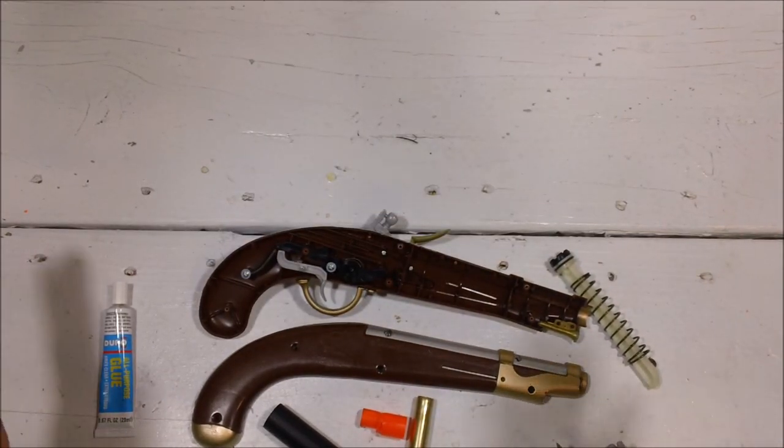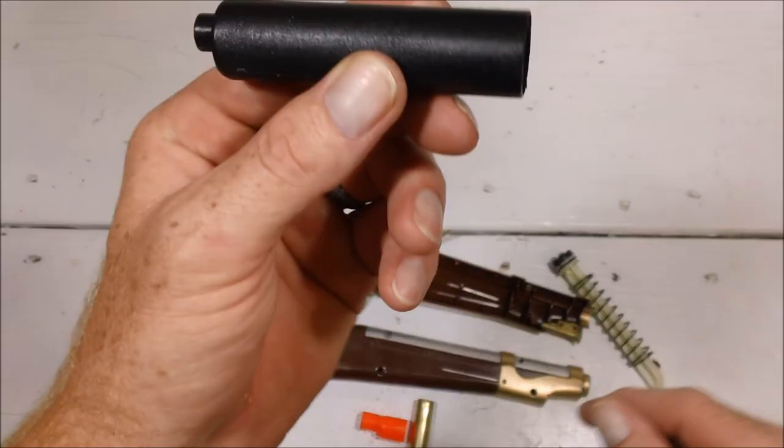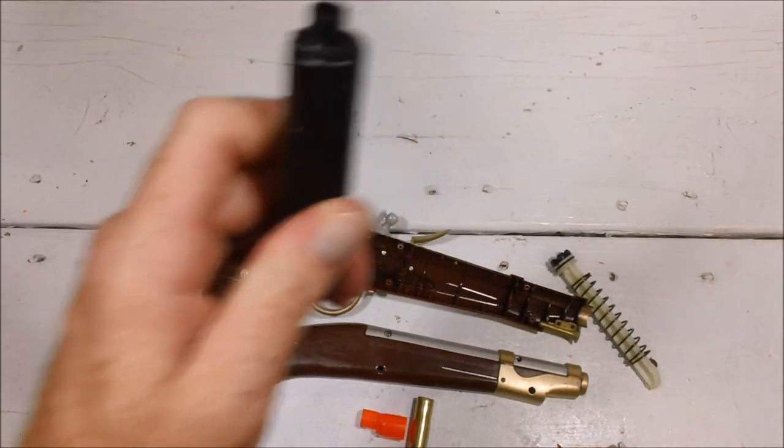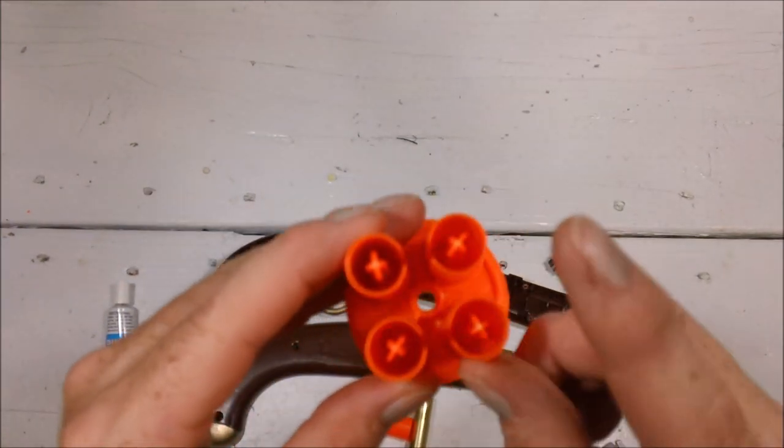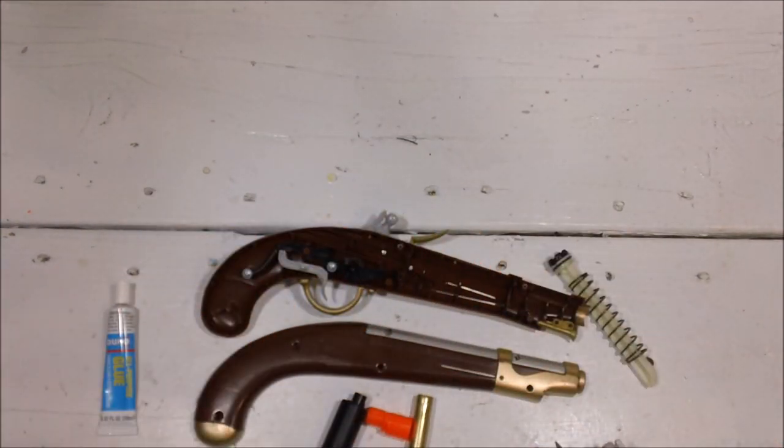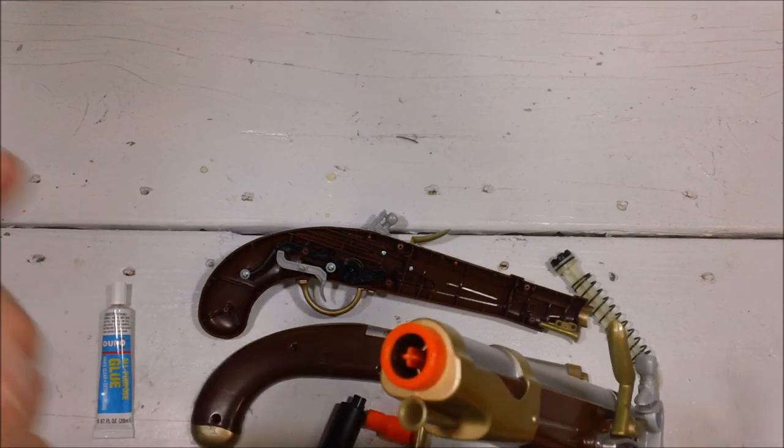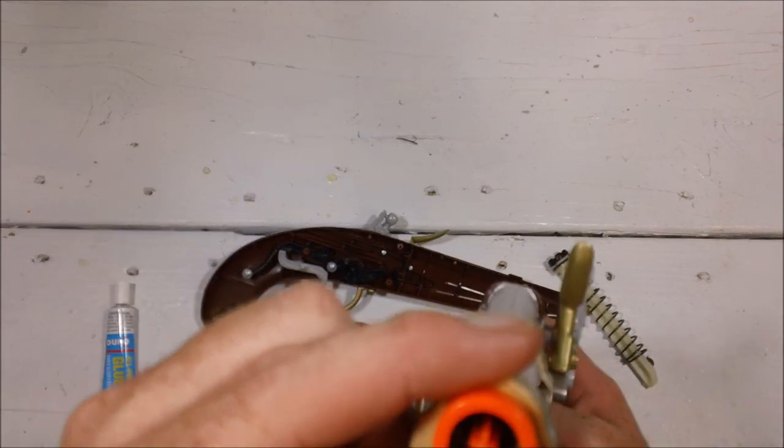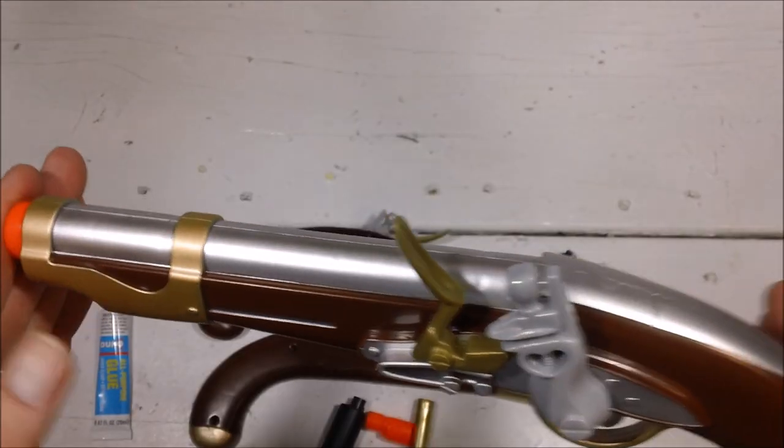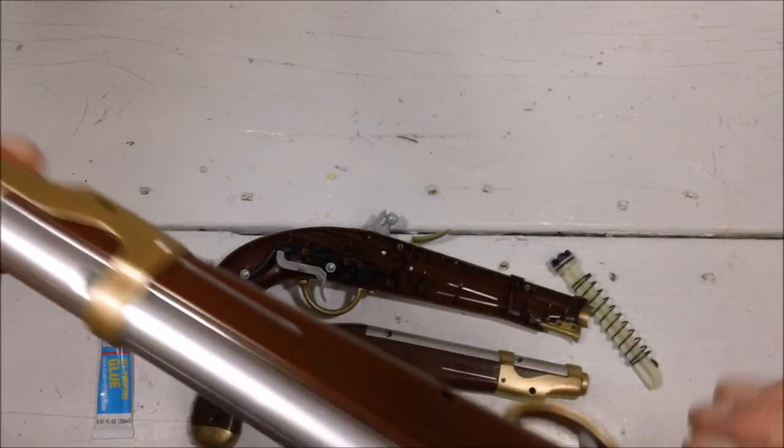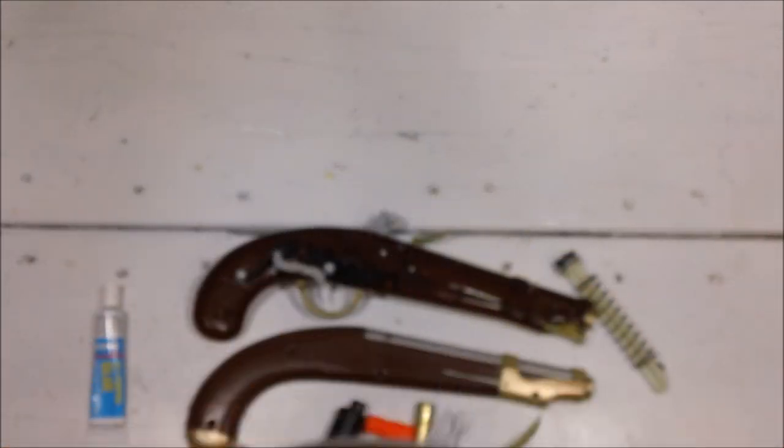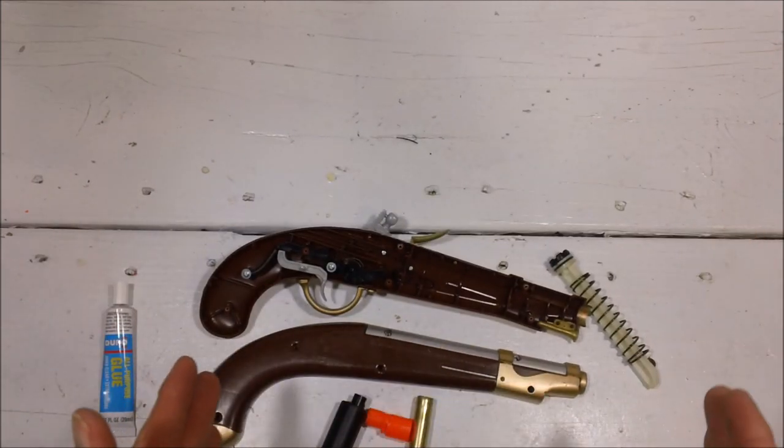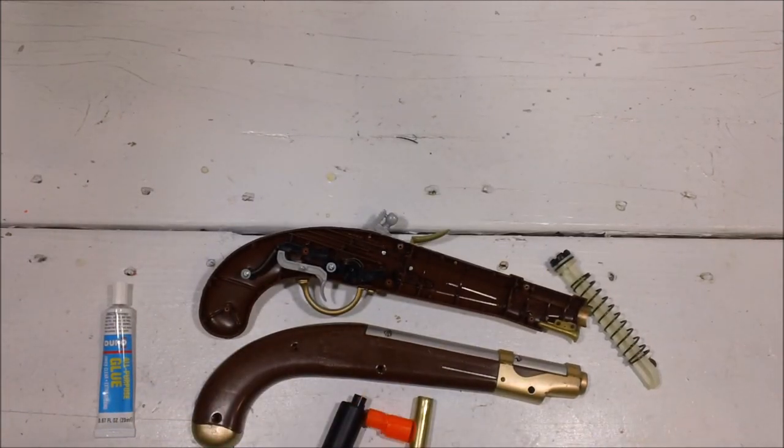So, on top of that, of course, it has an itty-bitty teeny tiny plunger tube. But the biggest hurdle for performance with this is that old style dart post, and it's almost like a jet nozzle. So, what we're going to do is take a look at taking this apart and see what we can do to get the performance raised at least a little bit.